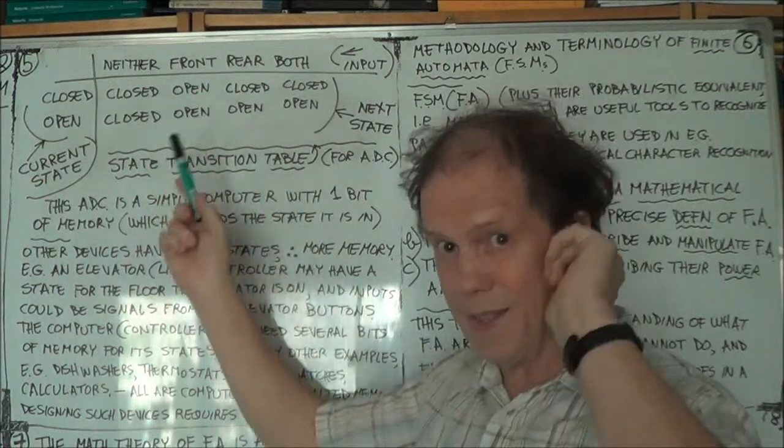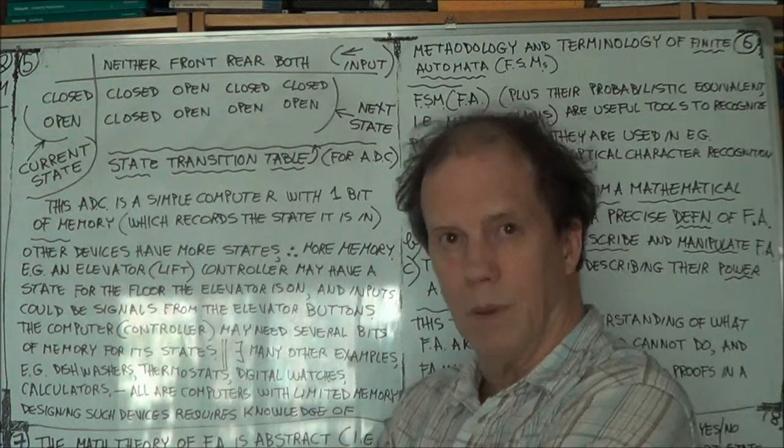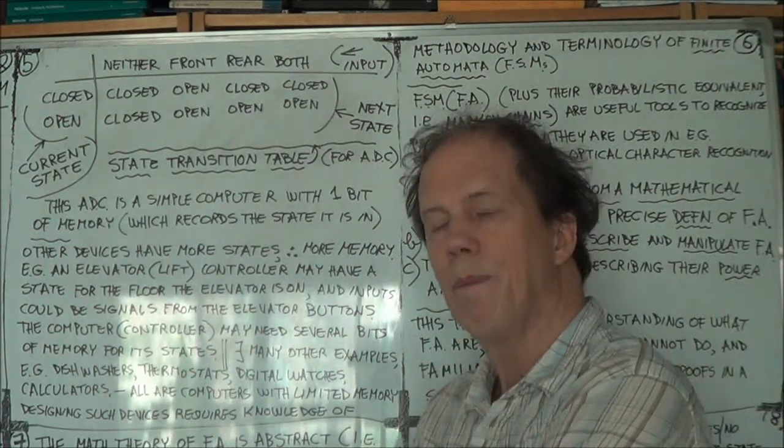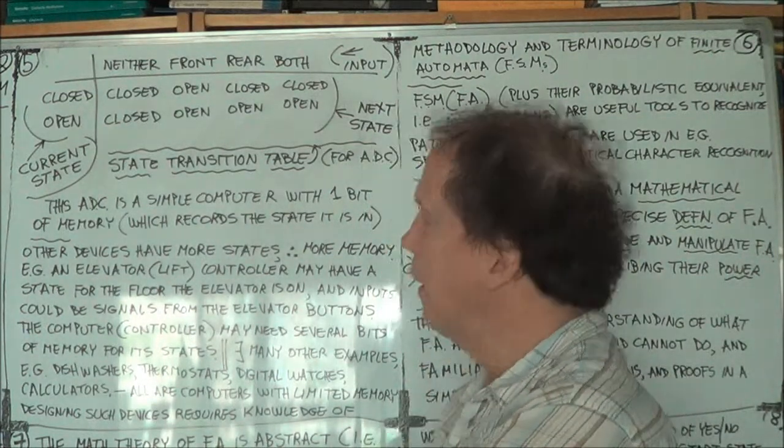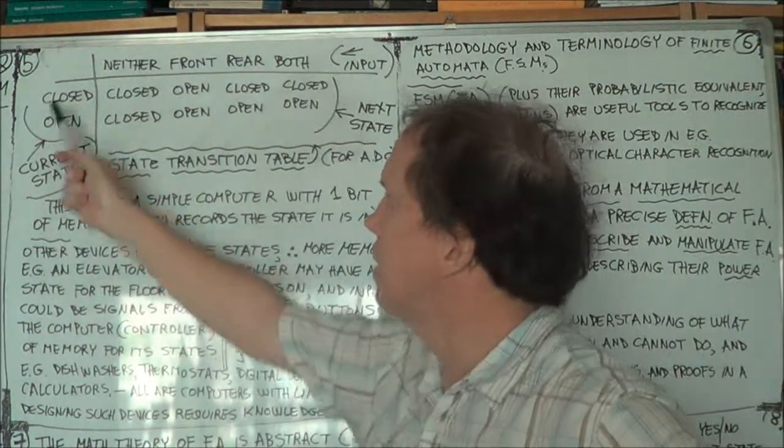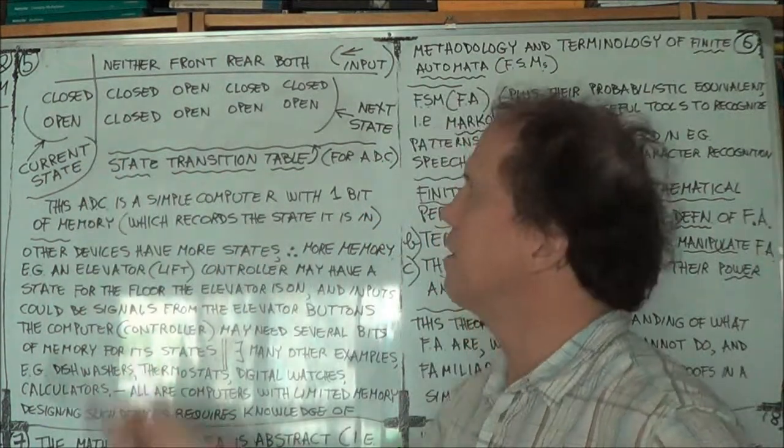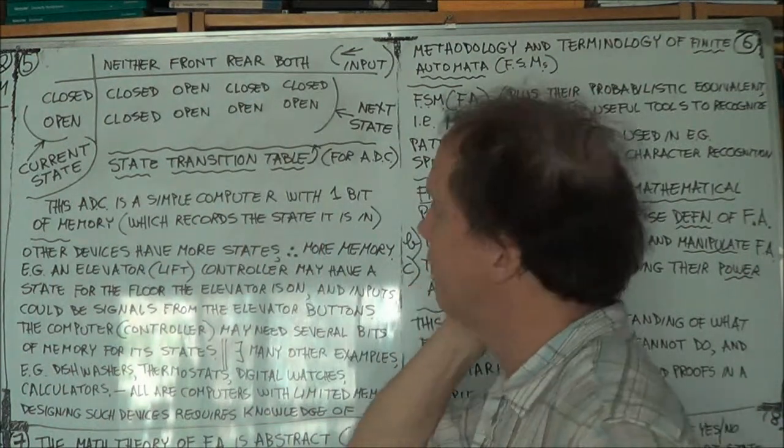Now, this ADC, this automatic door controller, is a very simple example of an automaton. A finite state machine, same thing. It has a finite number of states. In this case, just two. And a small number of input signals. Four different ones.